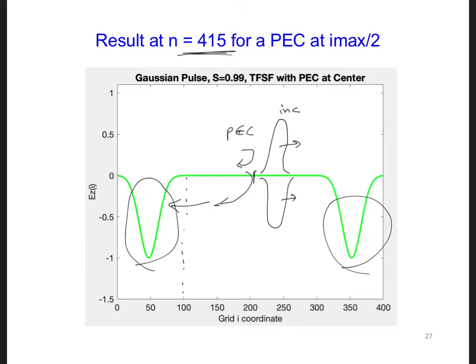So I have not drawn this to scale, but this goes to minus 1, and this goes to positive 1. Then at this right total field scatter field interface,